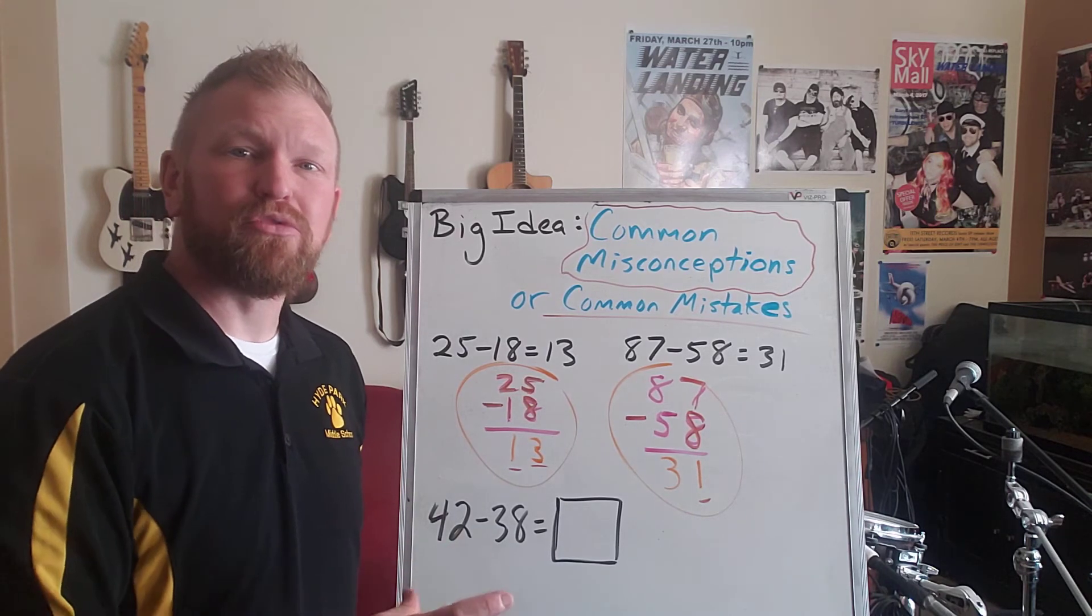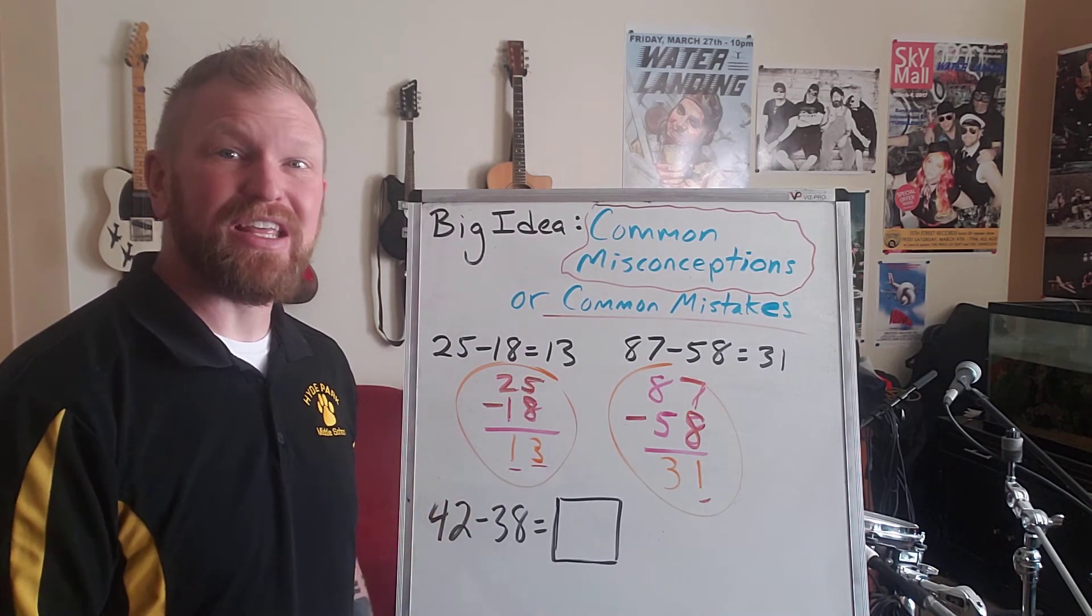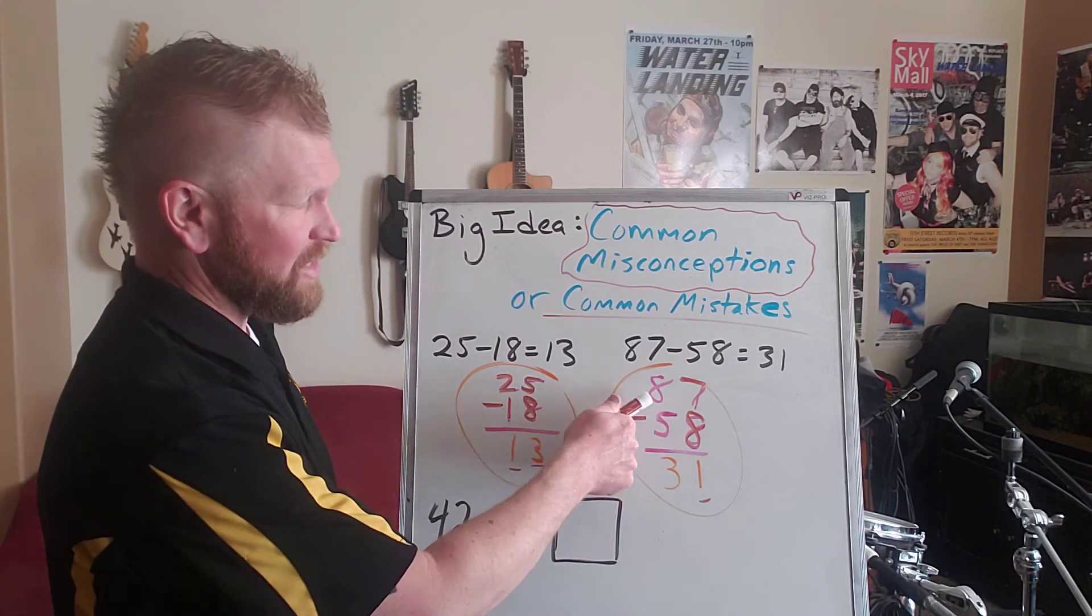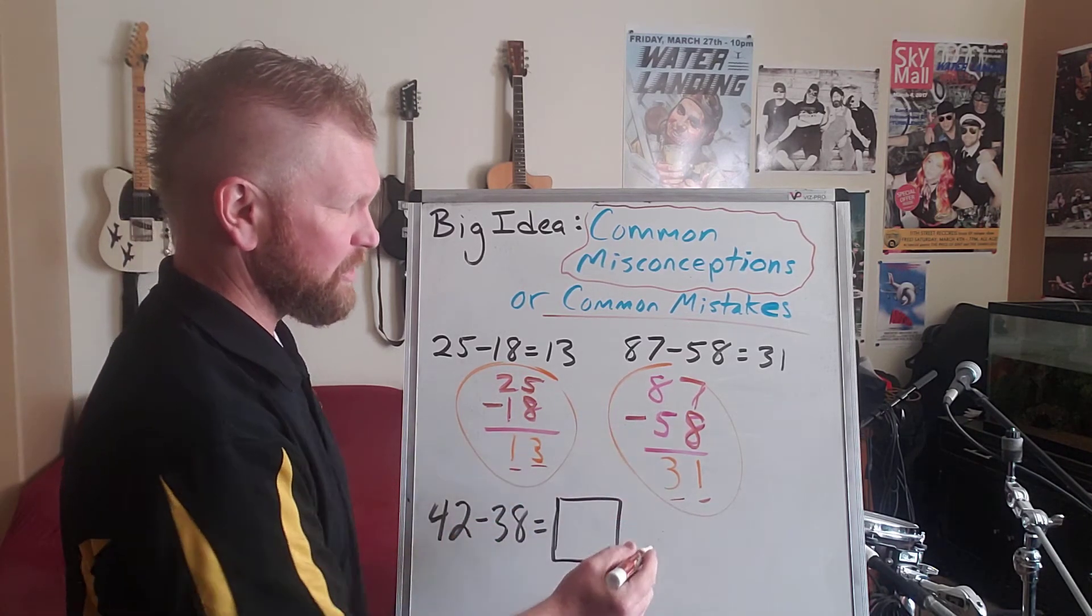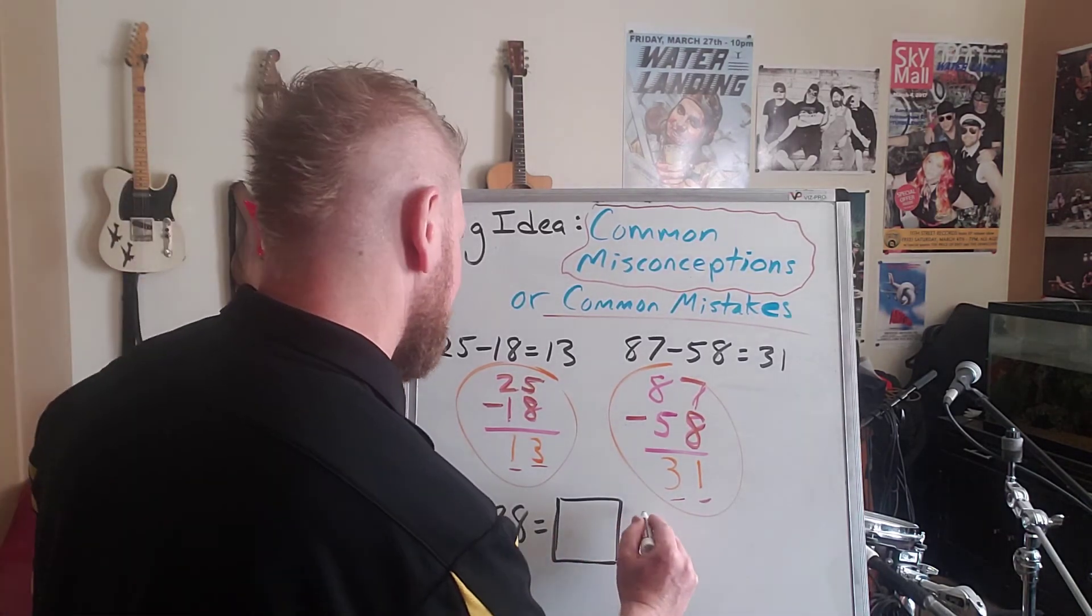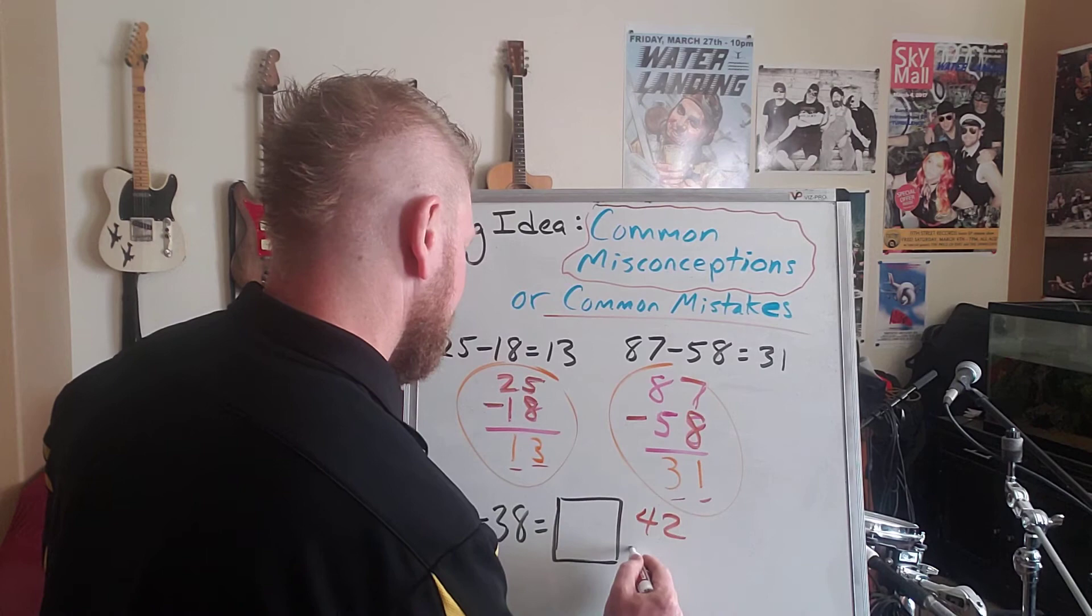So they're not regrouping. They're just subtracting the numbers in any order, which is not okay to do for this problem. And then they're saying, what is 8 take away 5? That's 3. So if they were to make that same mistake in this one, let's write it out this way. 42 minus 38.